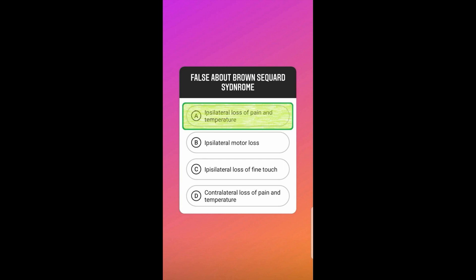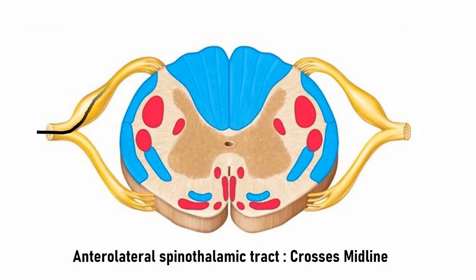The answer is option A: ipsilateral loss of pain and temperature. This is false because there is contralateral loss of pain and temperature sensation, due to the midline crossing of fibers.